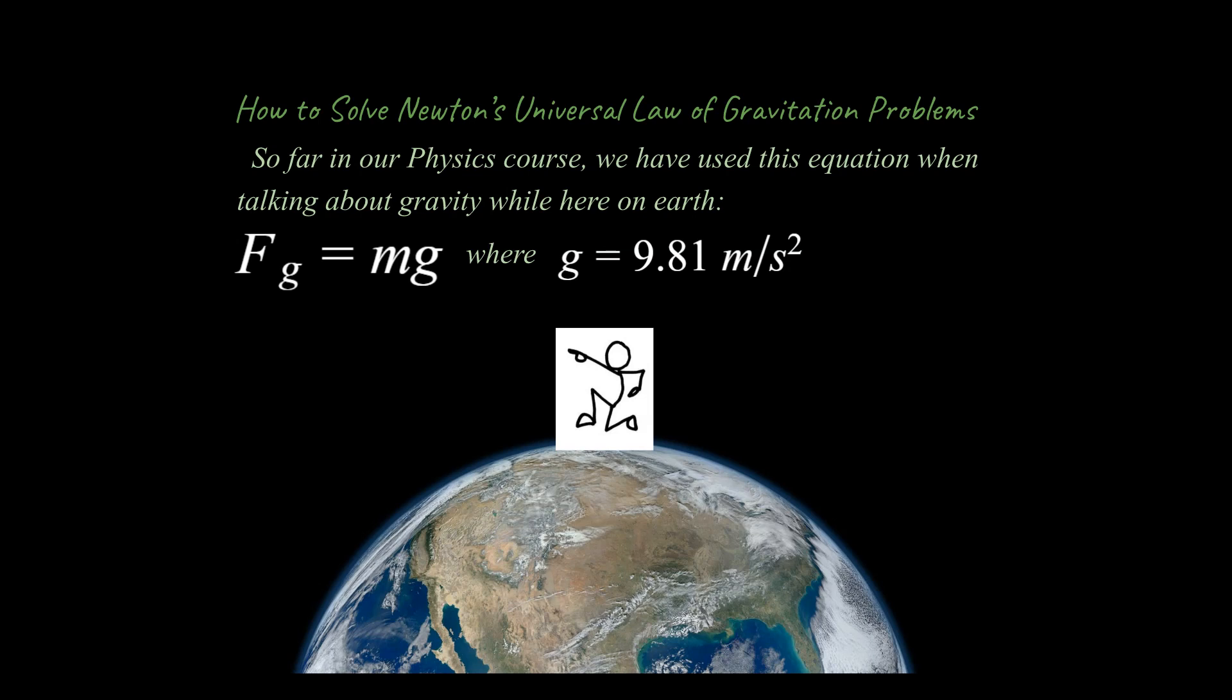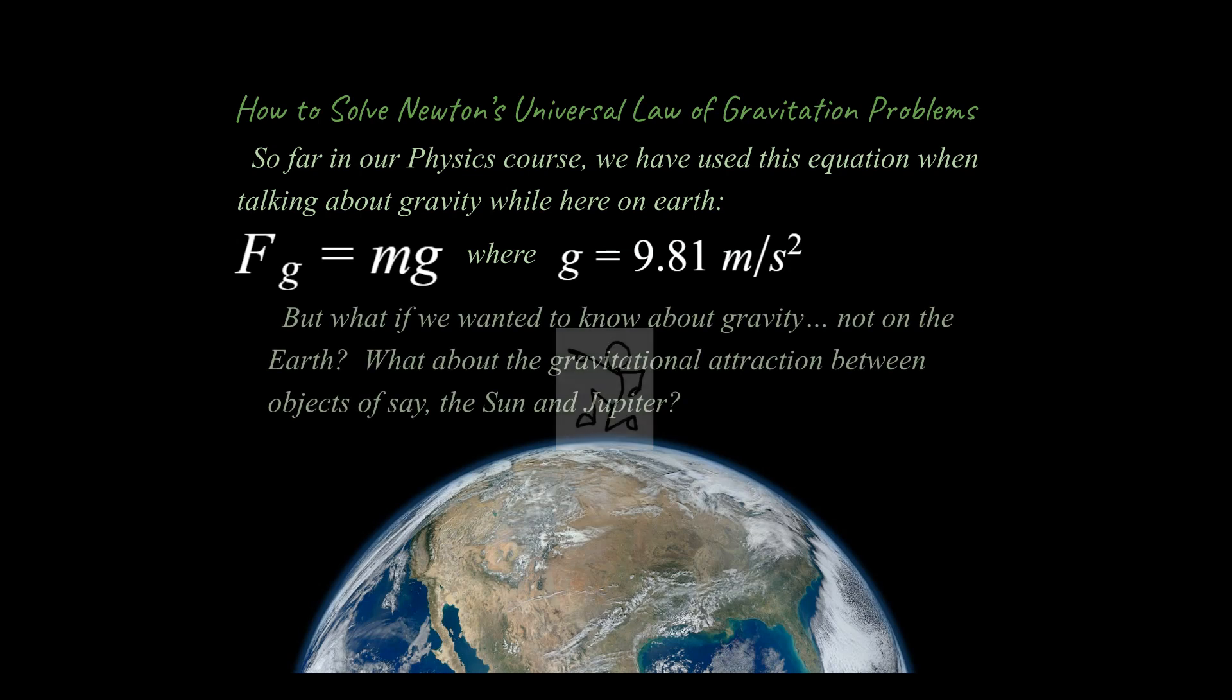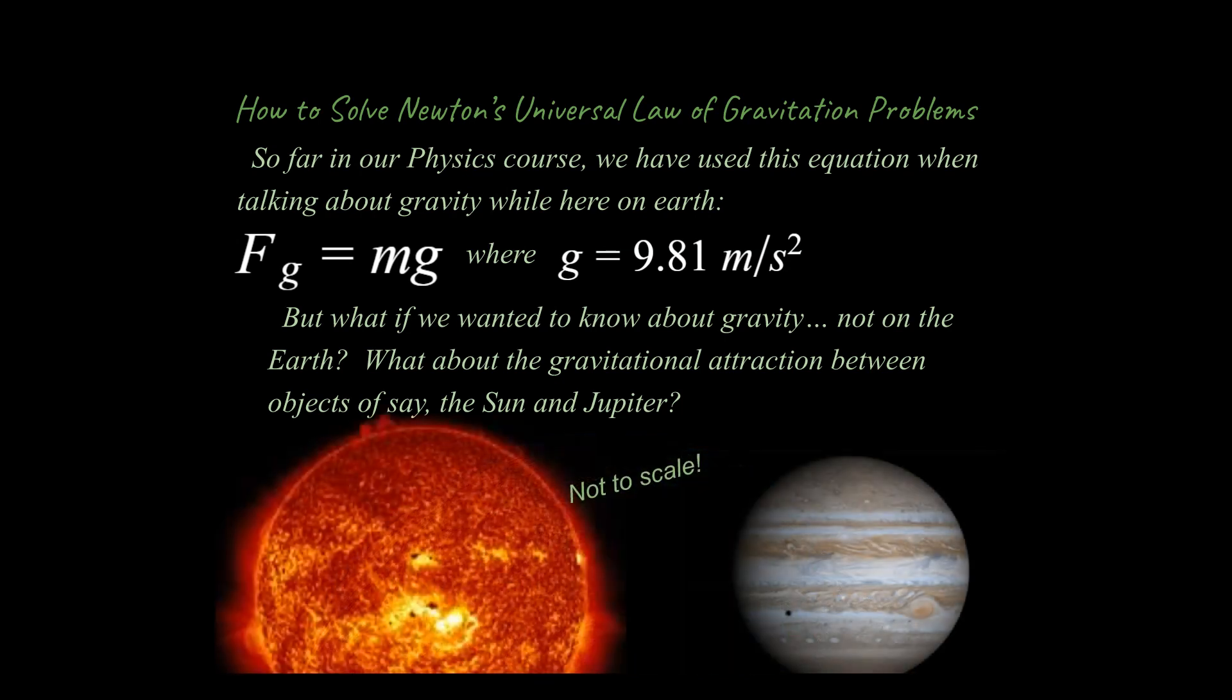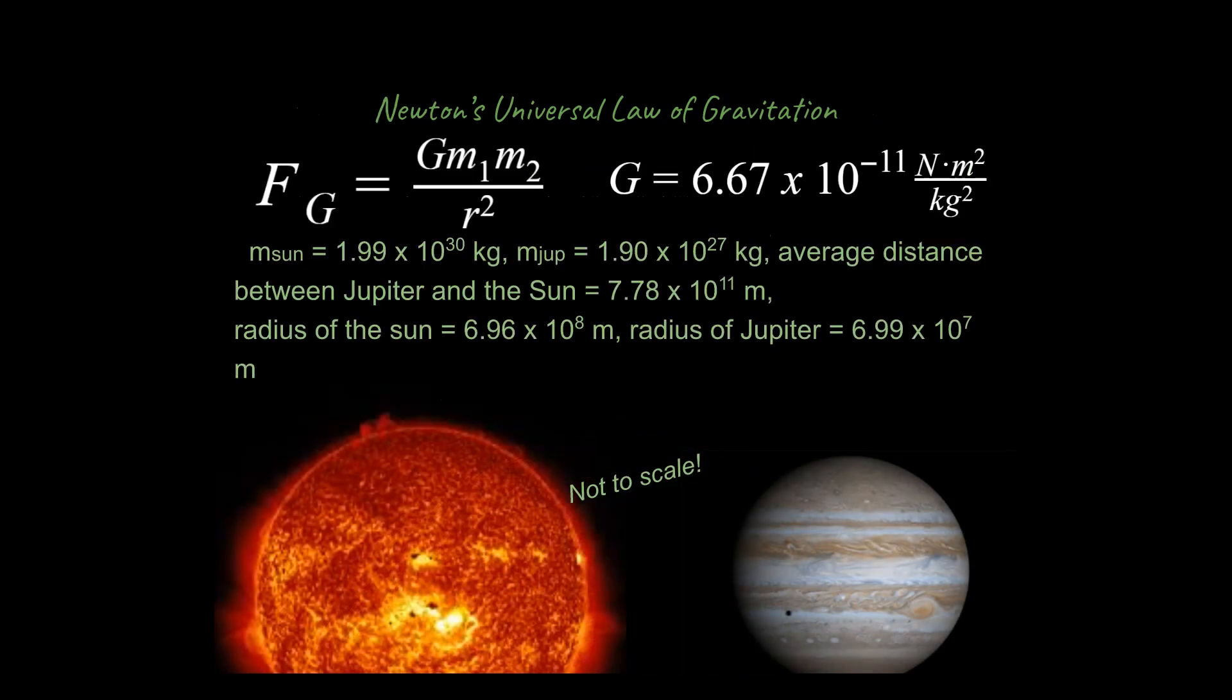All right, and that's all well and good, but the problem is that's only for the surface of the Earth, right near the surface of the Earth. What if we wanted to deal with objects that were not on the surface of the Earth, like let's say the attraction between the Sun and Jupiter? Let's think about how we would approach that problem. Well, we can't use the same equation that we used before, so we're going to have to use a new equation.